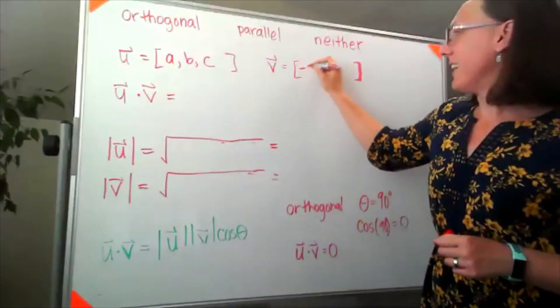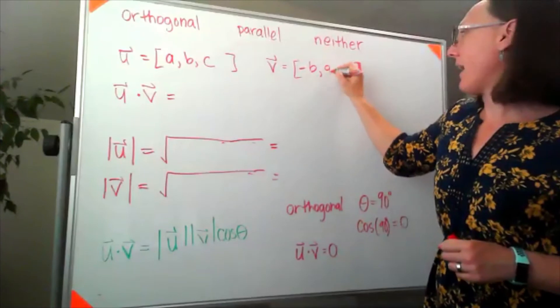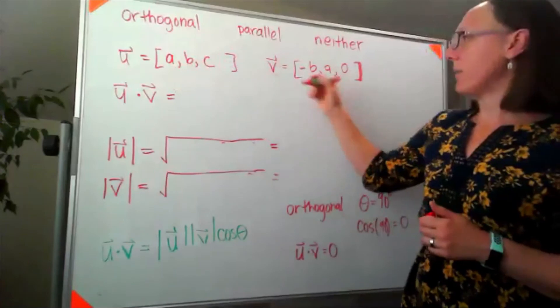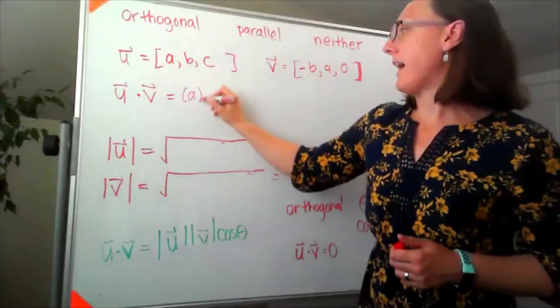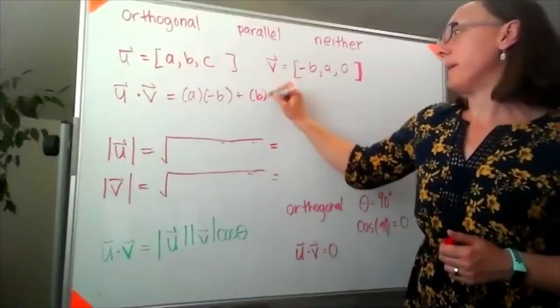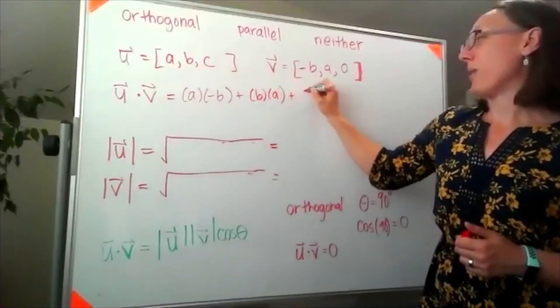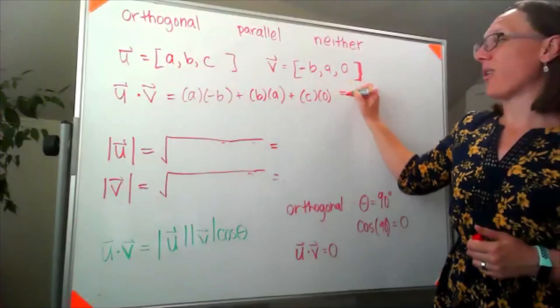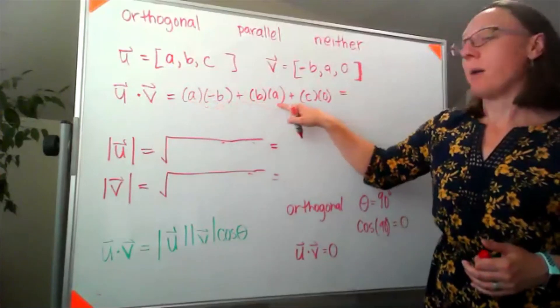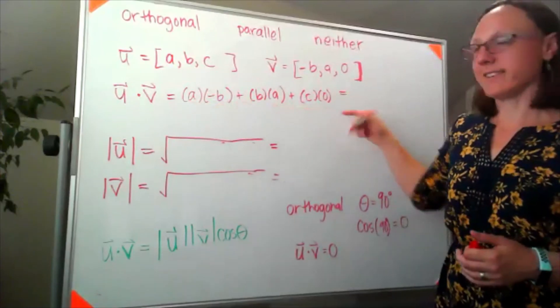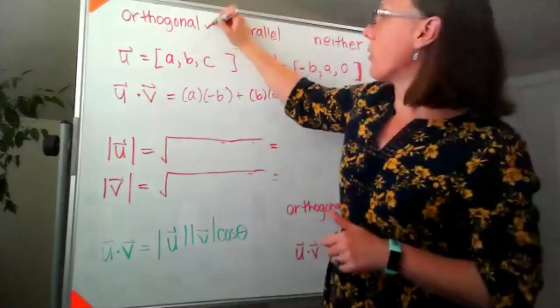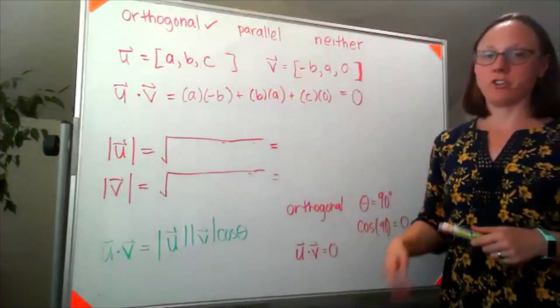So a, b, c, negative b, a, 0. So when I take the dot product, multiplying my first components together I've got a times negative b. Multiplying my second components together I've got b times a. And multiplying my last components together I have c times 0. That looks like my hunch was right. I've got negative ab, positive ab plus 0. So overall this works out to be 0, which means these are orthogonal and I don't even have to do the rest of it.